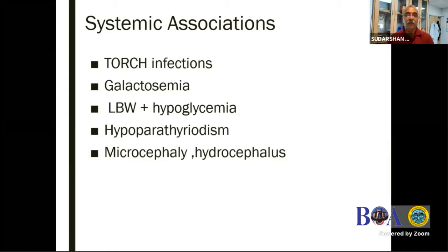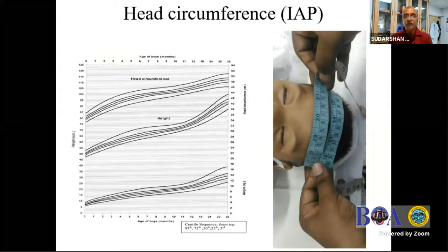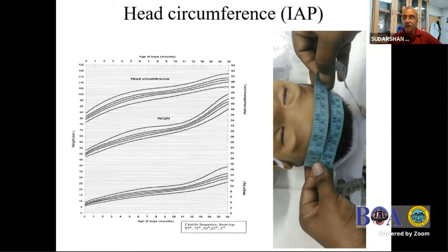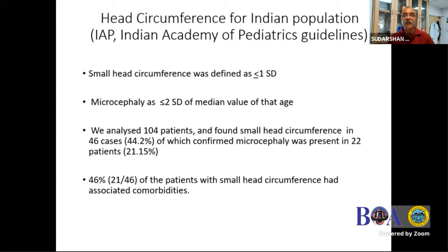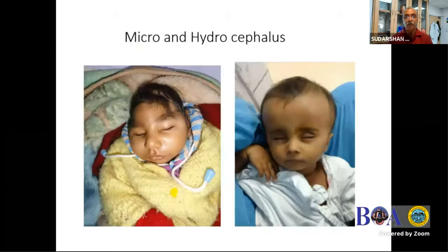Systemic associations could be TORCH infection - rubella is the most common. Then you have galactosemia. We added something about 10 years back: we do a head circumference measurement. According to the Indian Academy of Pediatrics guideline, if it's less than one standard deviation small, we call it small head circumference; less than two standard deviations smaller, it becomes microcephaly. We found a large number of patients in our subset who had microcephaly but didn't have rubella or anything. So there are many condition combinations we still don't have names for. Please always measure the head circumference - it makes a difference to follow-up. This is a rubella patient with a typical small head. But this other patient looks normal, yet the head is big - he was hydrocephalic and had a shunt placed later.